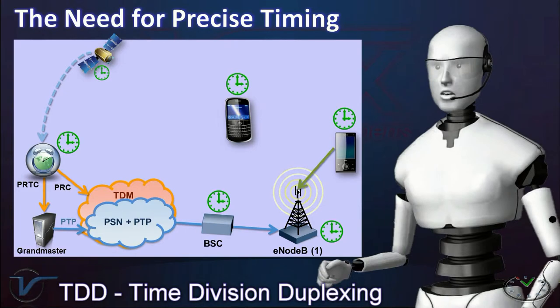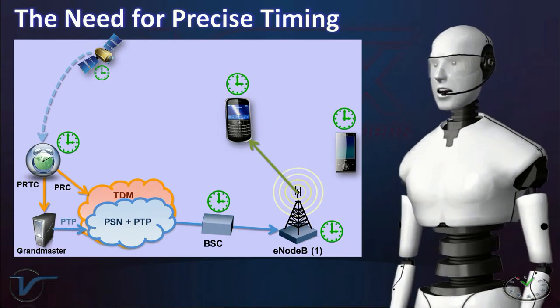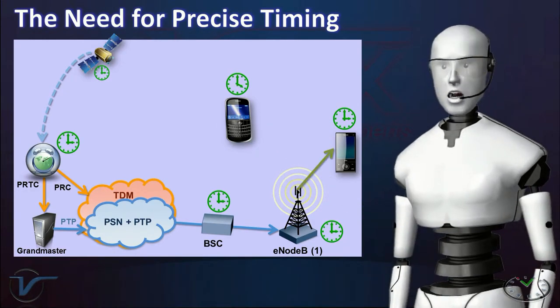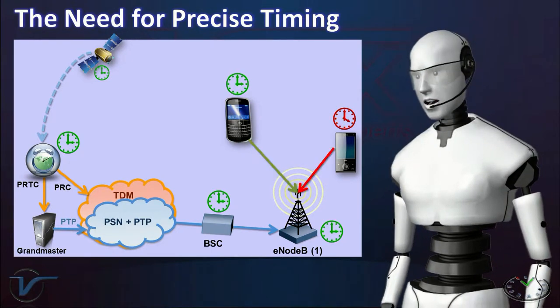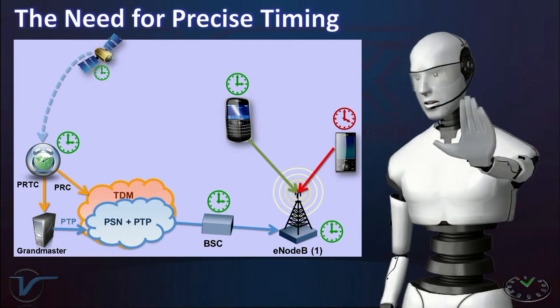So every mobile device needs to know when to talk and when to listen. If a base station or a mobile has the wrong timing, it may talk at the wrong time and interfere with somebody else's communication.